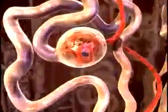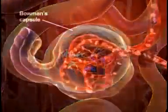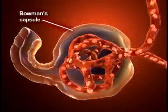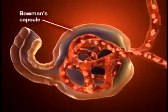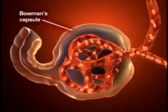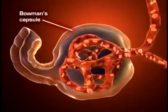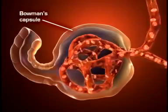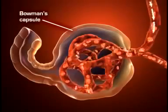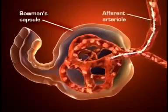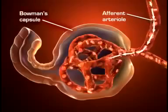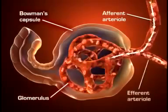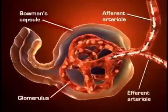The lobular arteries further subdivide to form interlobular arteries, which branch off into afferent arterioles. Blood flows into the glomeruli through the afferent arterioles, and blood flows out of the glomerulus through the efferent arterioles.